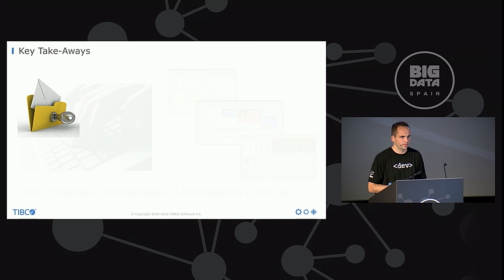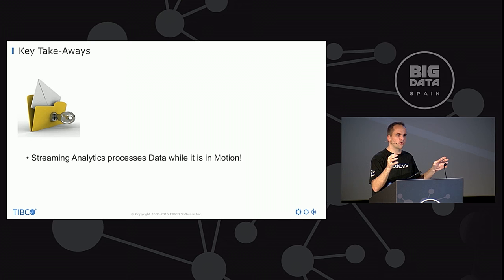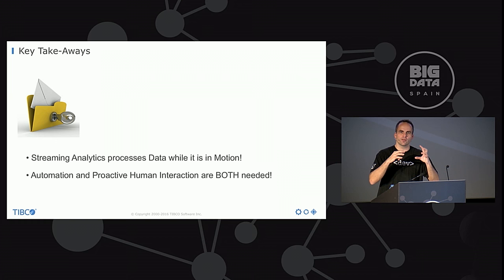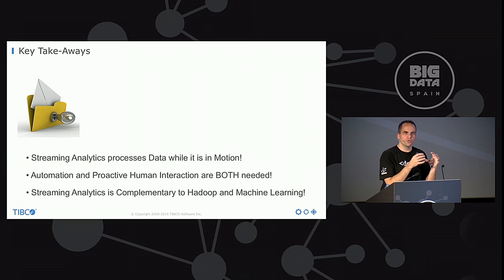To sum up the key takeaways: streaming analytics is really about processing data while it is in motion. Go to the other sessions about Flink and Apex for more detail and how to code it. The key difference is that you program in continuous queries and sliding windows — a huge difference from traditional programming. Besides that, you often need proactive human interaction via a live UI on top. Streaming analytics is complementary to many other solutions like Apache Hadoop, Apache Spark, and machine learning, because if you don't have insights and patterns from historical analytics, you don't know what to implement in streaming analytics. You typically start with historical analytics and then move forward to streaming.